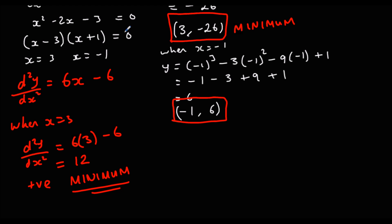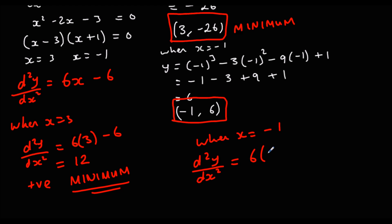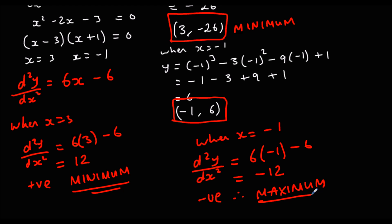And for the other stationary point: when x is minus 1, the gradient of the gradient is 6(−1) − 6, which is minus 12. So that's negative — therefore it is a maximum.